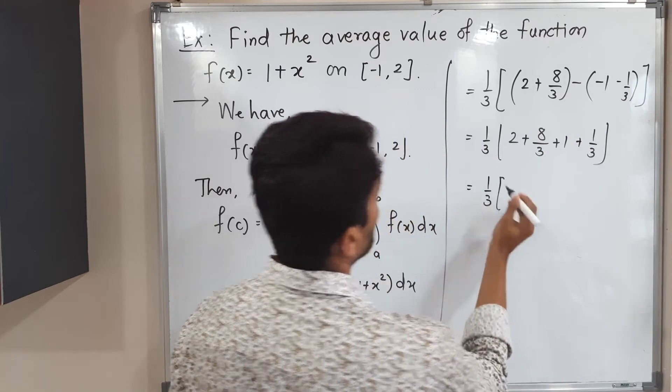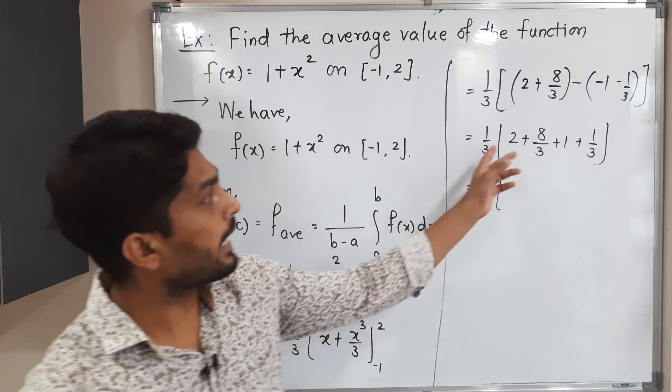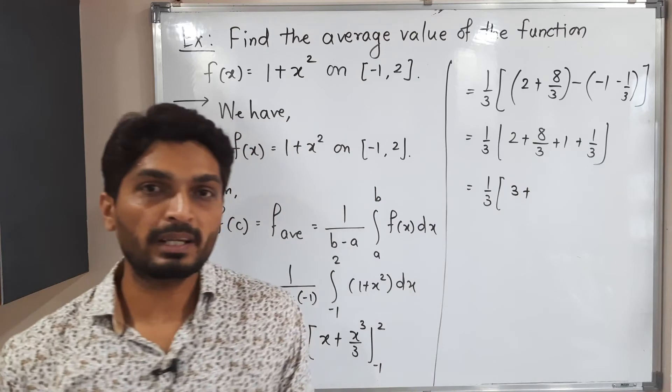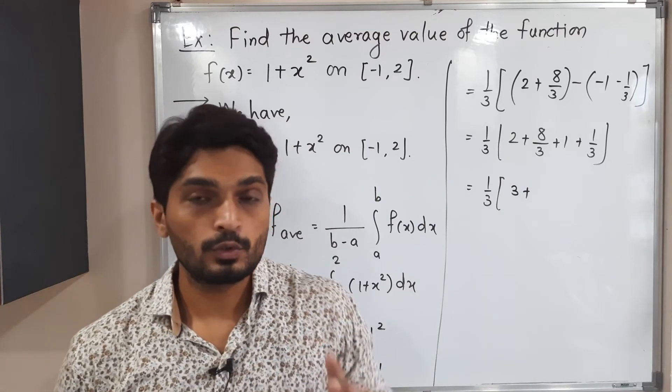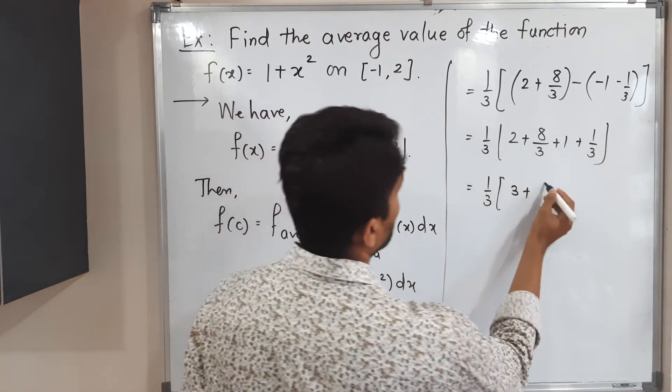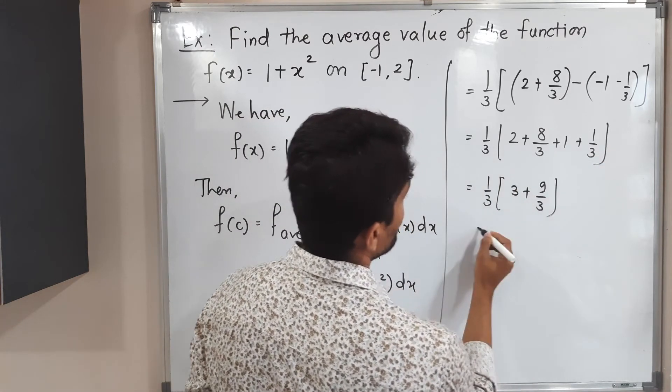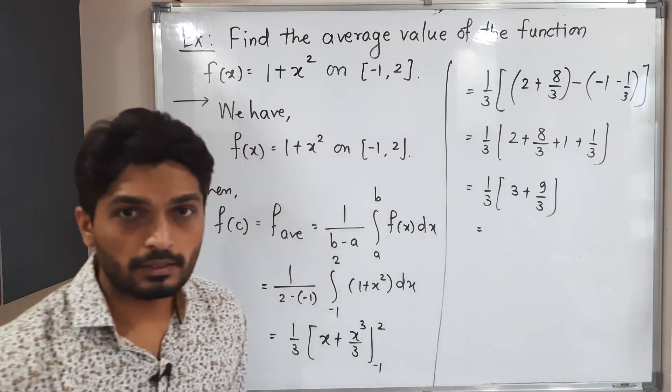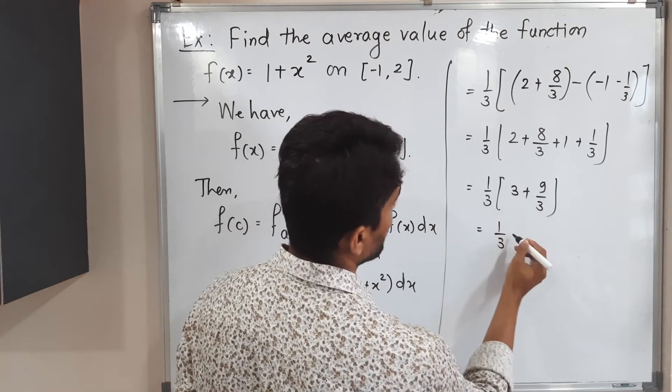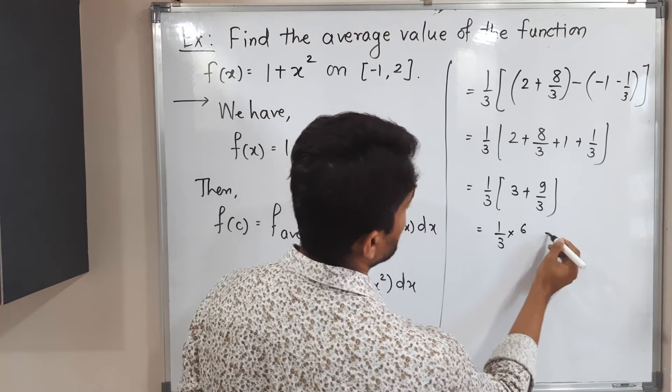So let us continue, 1 by 3. What will happen if you solve the brackets? 8 by 3 plus 1 by 3. We will add 2 and 1, it will be 3. 8 by 3 plus 1 by 3, both have the same denominator, so you can add numerators. 8 plus 1, 9 by 3. So 3 and 3 will get cancelled. 3 plus 3, 6. So 3 and 3 cancel and we'll have 2.